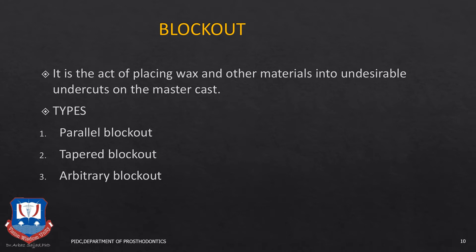Before the fabrication of the refractory cast, the master cast is then prepared for duplication. First the block out is done of the master cast. There are usually three parts of block outs: a parallel block out, a tapered or shaped block out, and an arbitrary block out.